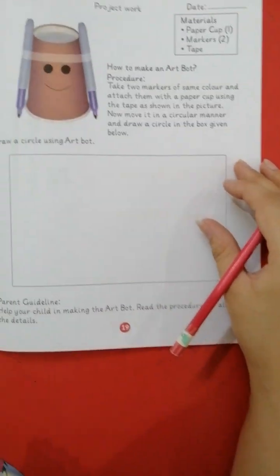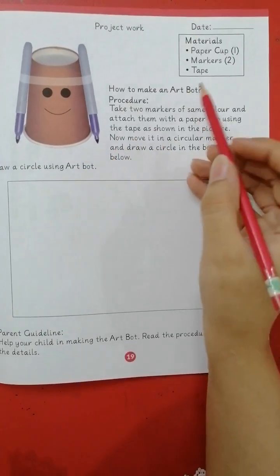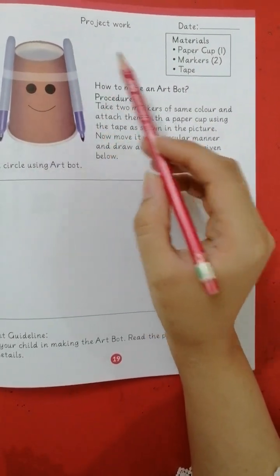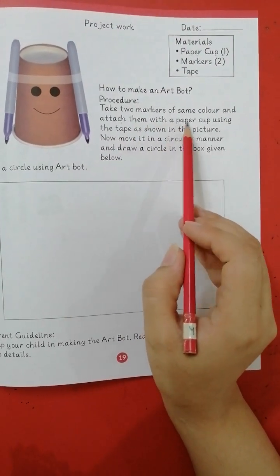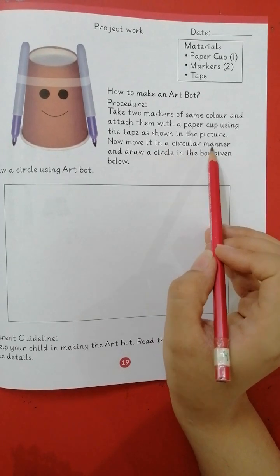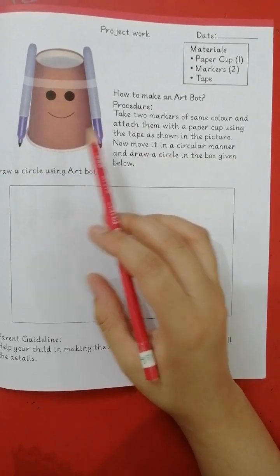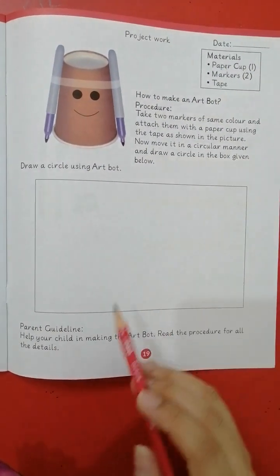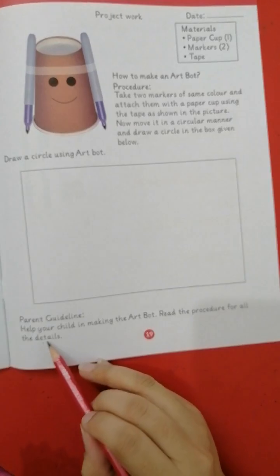Next is project work. How to make an art board. Materials are paper cup, markers, and tape. Take two markers of same color and attach them with a paper cup using the tape as shown in the picture. Now move it in a circular manner and draw a circle on the box given below. You have to do it and then you will move it in the circular position to make a circle over here. Help your child in making the art board. Read the procedure for all the details.